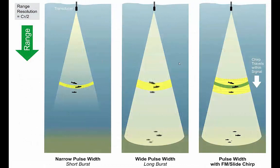Here is an illustrative example of the differences between narrow pulse width, wide pulse width, and FM slide chirp signals. For a narrow pulse width, spatial resolution is high but range, because of the lack of signal-to-noise ratio, is reduced. For wide pulse widths, range is increased because of the wide pulse and the amount of energy that can be put into a ping of that nature, but resolution is limited.